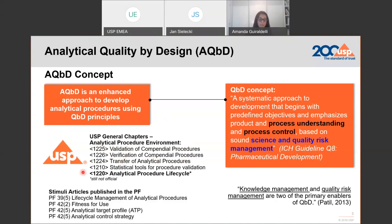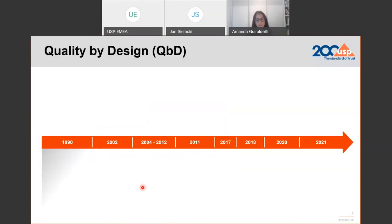I would also like to highlight the new proposed Chapter 1220 on analytical procedure lifecycle, which presents a holistic approach for management of knowledge and the procedure lifecycle. You will also find in the Pharmacopeia Forum several stimuli articles published by USP addressing different key aspects of the procedure lifecycle. All these key elements are essentially the same key elements of AQBD, because the procedure lifecycle is driven by quality by design principles.